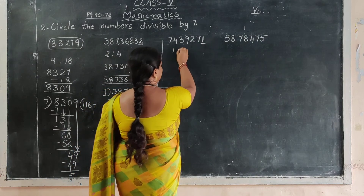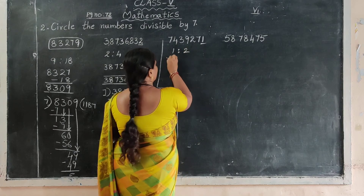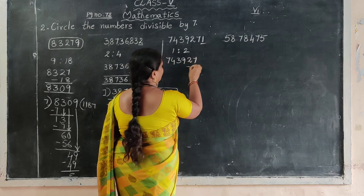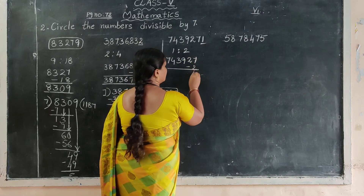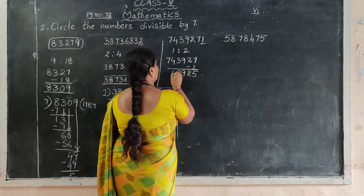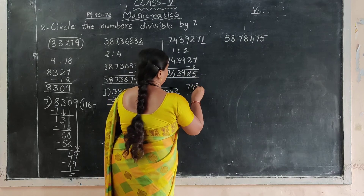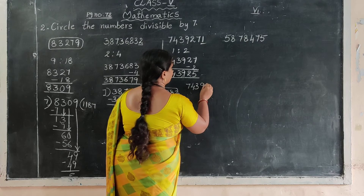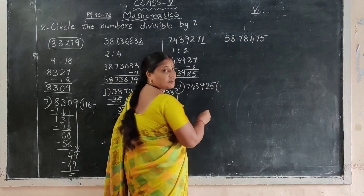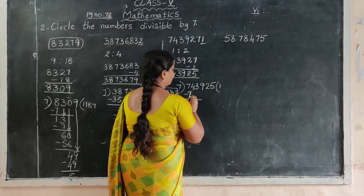Next number: the last digit is 1. Double the digit: 1 plus 1 equals 2. Now subtract 2 from the rest of the digits. 7 minus 7 equals 0.